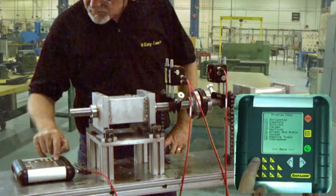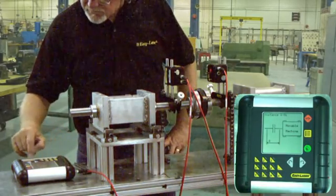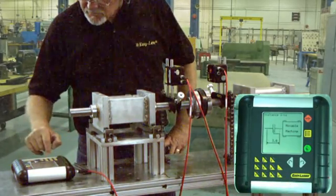Here we will do a horizontal alignment using program 11 with the coupling attached. The program prompts us to input the tape measurements. Since we have already taken them, we can input the distance S to M as 6 inches.